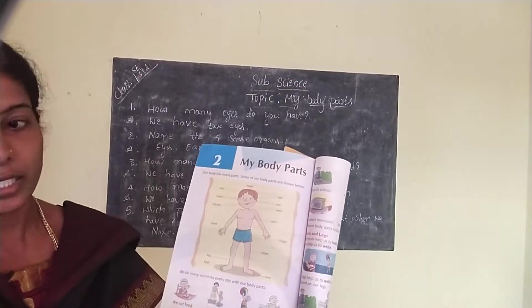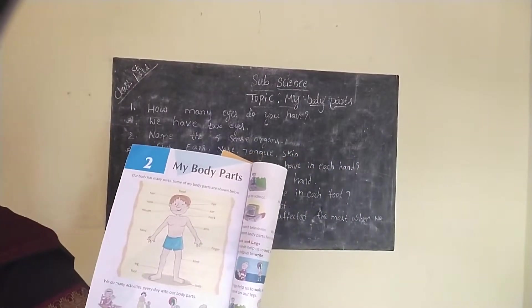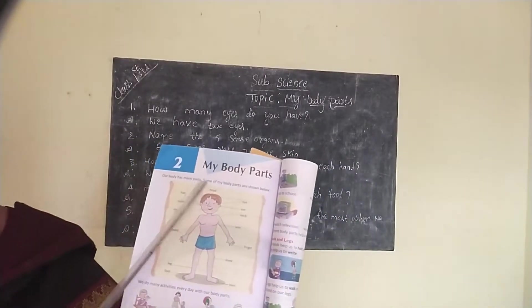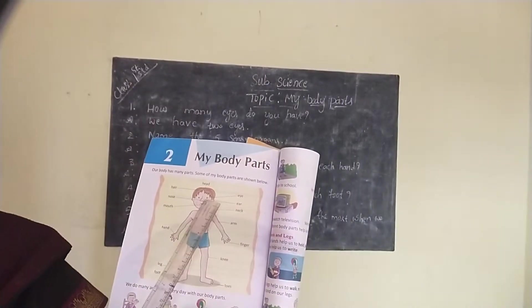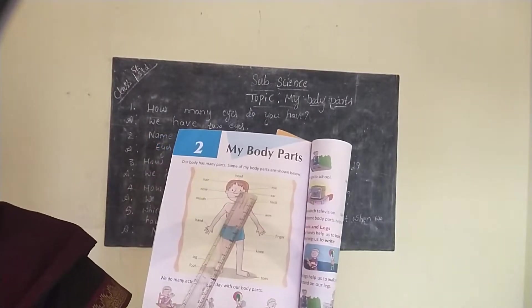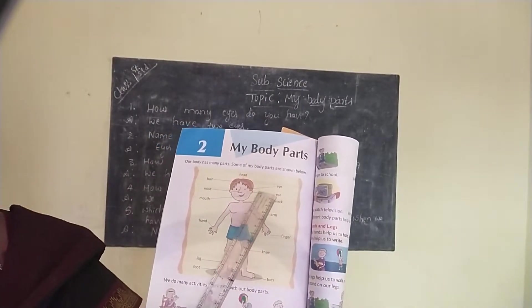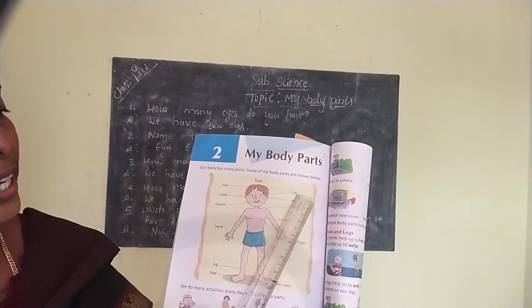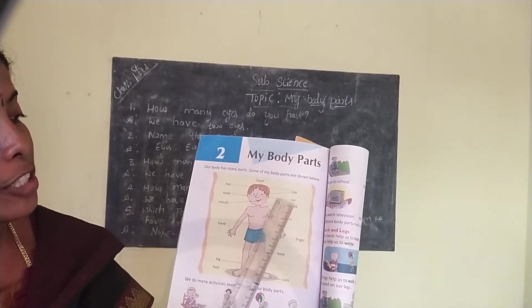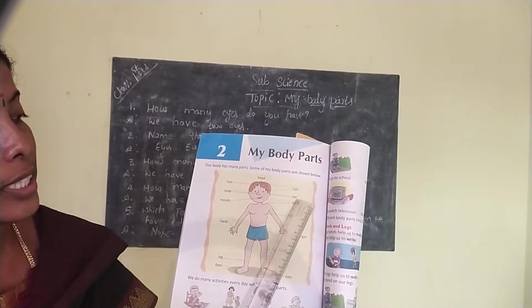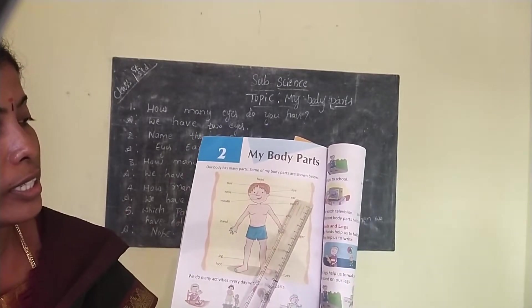Which part is this? Head. Which part is this? Yes, head. Next, which part is this? Yes, it is eye. Next, which part is this? Ear. E-A-R. Ear.